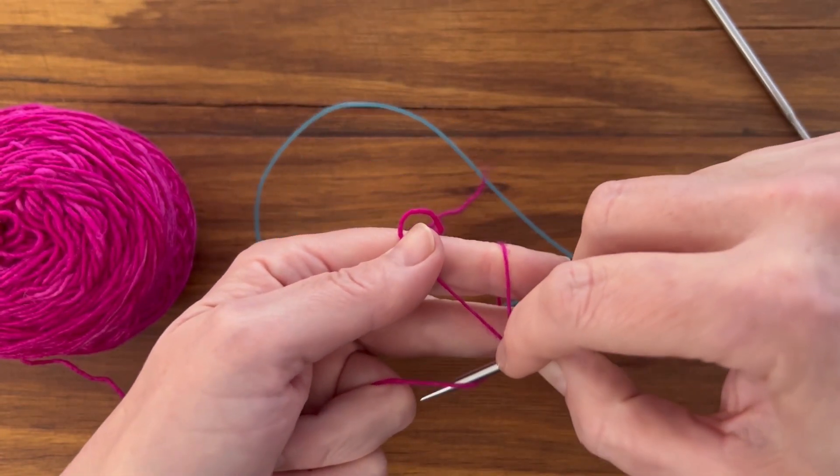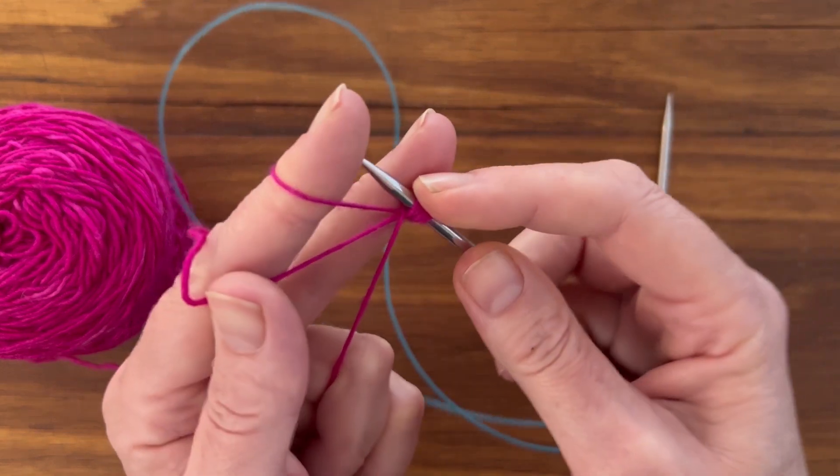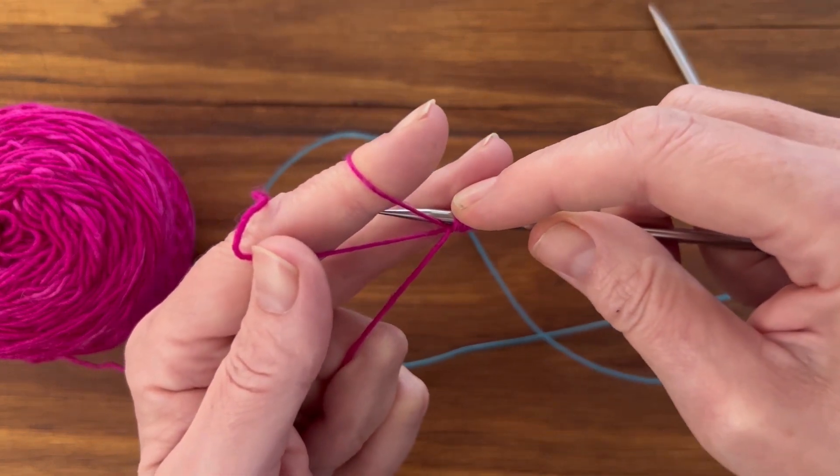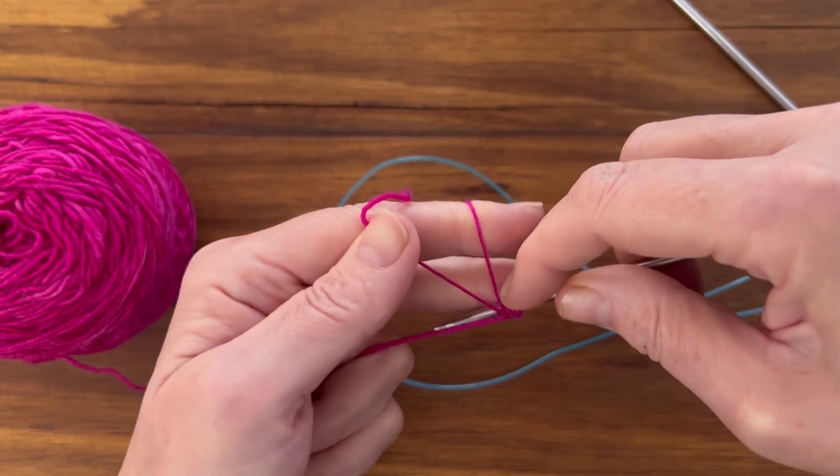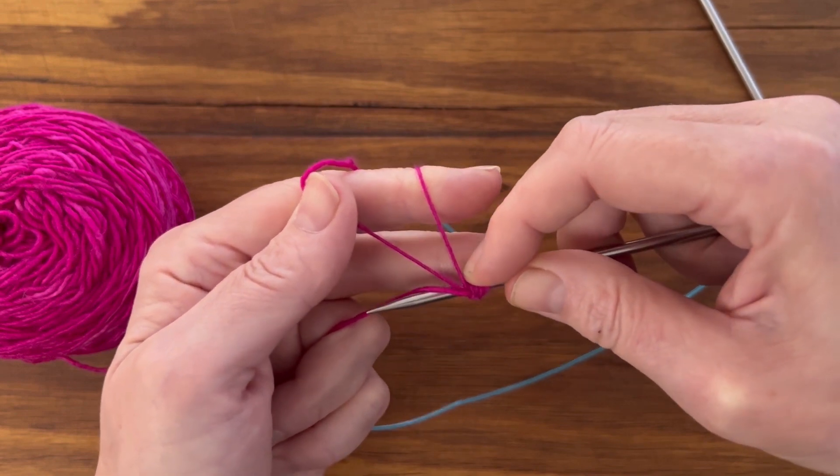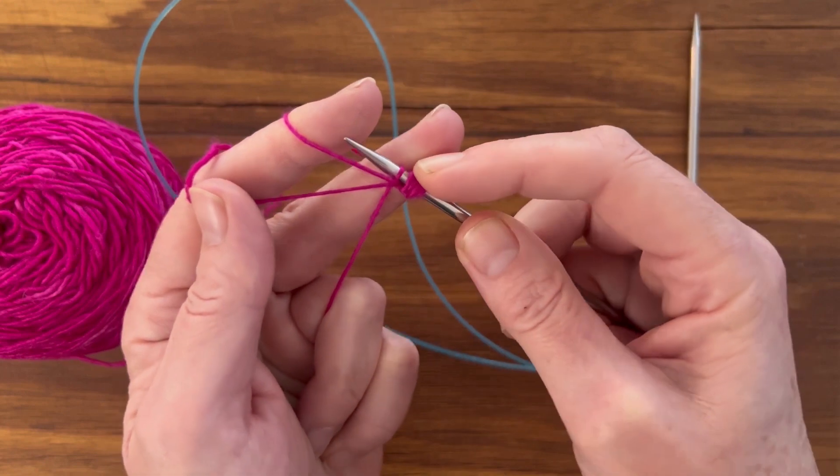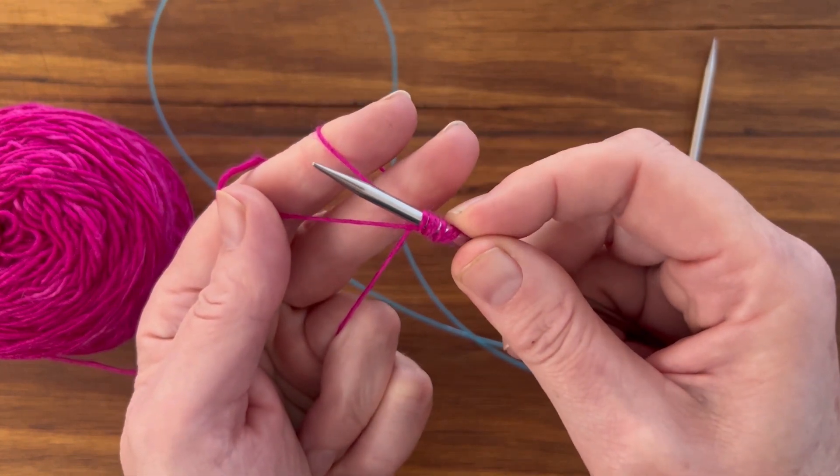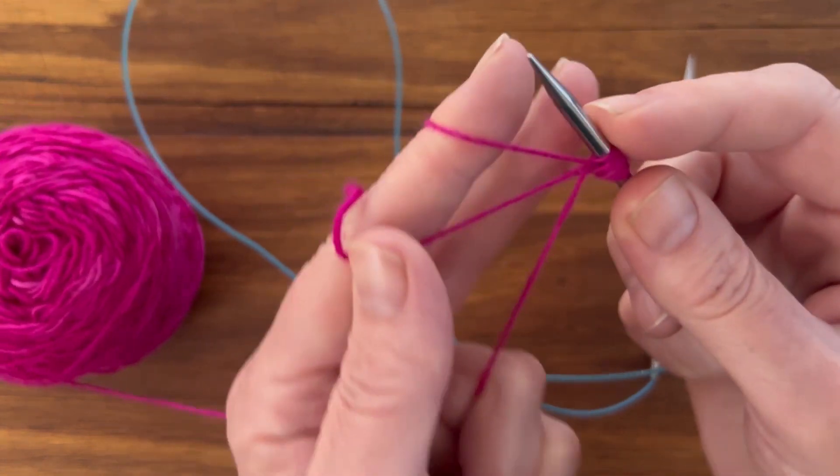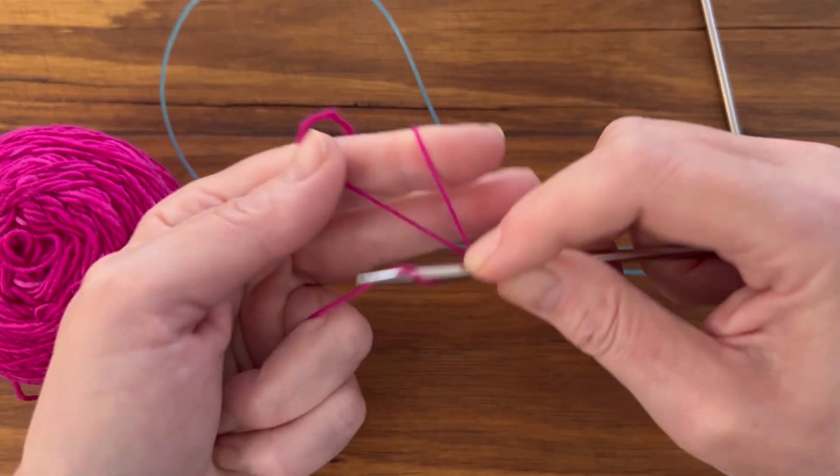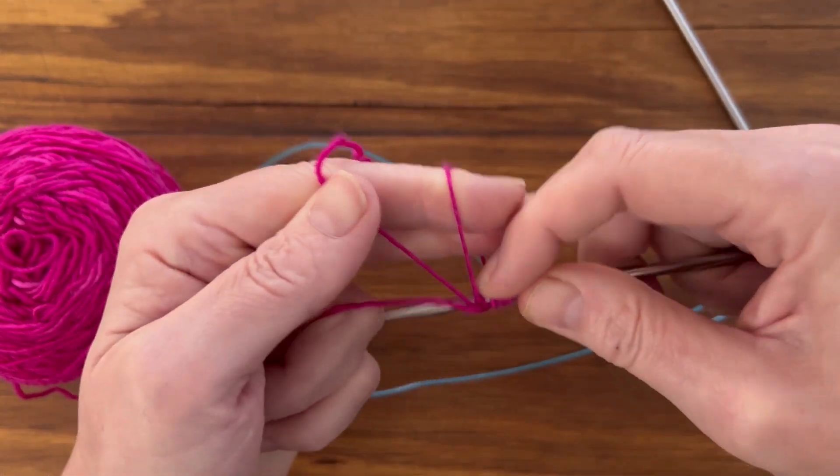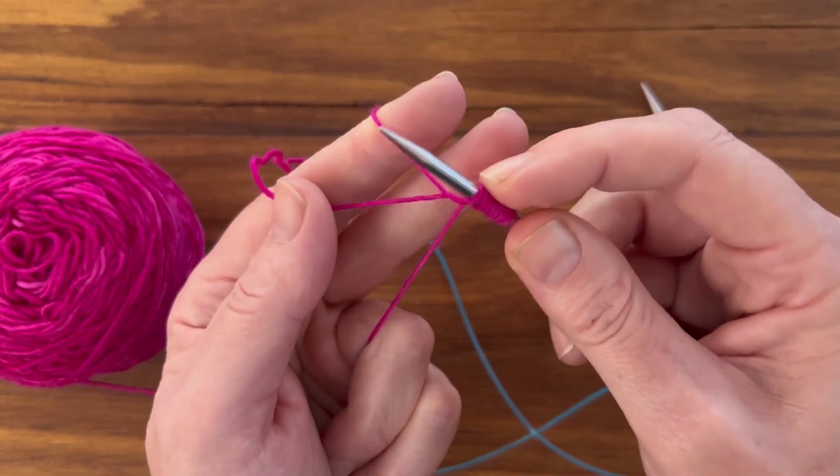Under, up, through the loop. Back under. Pick up the working yarn. And bring it back up through the loop for six stitches. And again. That's eight stitches.